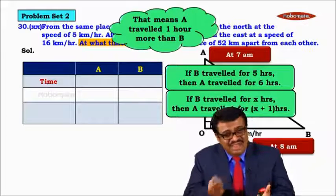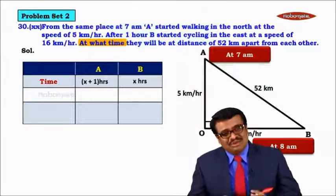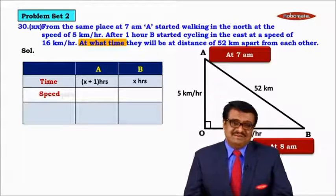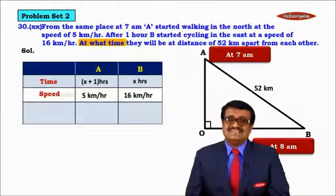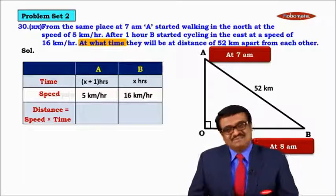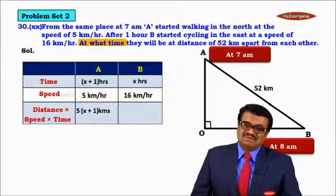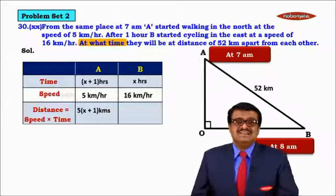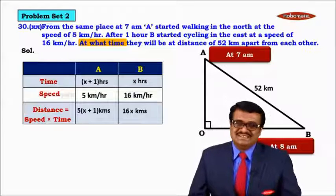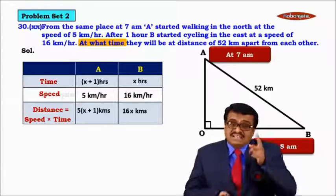The speed of A is 5 km/h and the speed of B is 16 km/h. Since we know time and speed, we can calculate distance using: distance = speed × time. Distance traveled by A is 5 × (X + 1), which equals 5(X+1) kilometers. Distance traveled by B is 16 × X, which equals 16X kilometers. We now know OA = 5(X+1), OB = 16X, and AB = 52 kilometers.